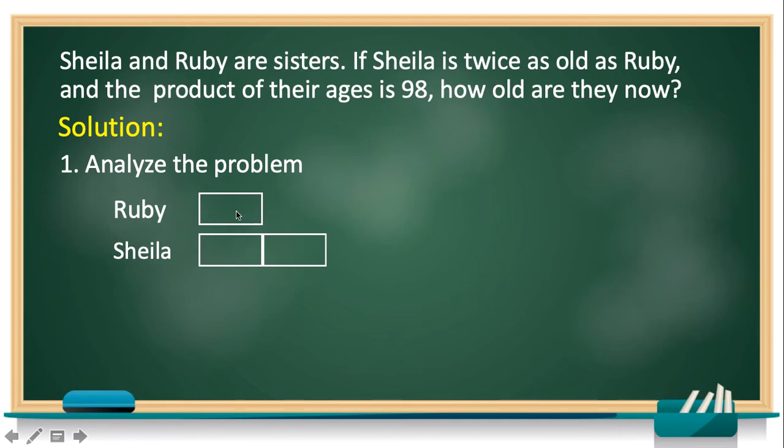Then let's represent those blocks with a variable. Let's start with Ruby as X. Remember, you can use any letters you want, but since X is commonly used, let's stick to X. If Ruby is X, so Shella should be 2X, since Shella has two blocks that represent her age. Then in the problem, it says the product of their ages is 98. So it means both of these variables should have the value of 98 when multiplied.